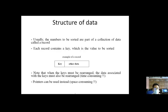Now, the structures in which the data are stored — usually the numbers to be sorted are part of a collection of data. Each record contains a key which is the value to be sorted. Every data contains a key value on the basis of which we arrange or order the data. This key is very essential because on the basis of this key we set the order between the different data.